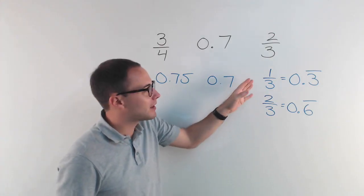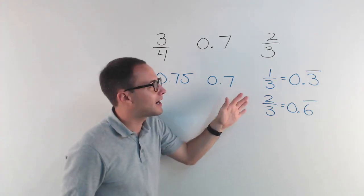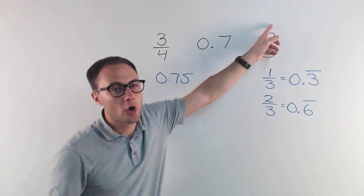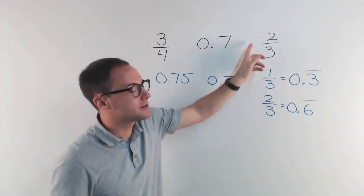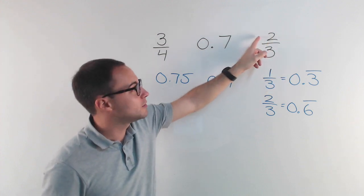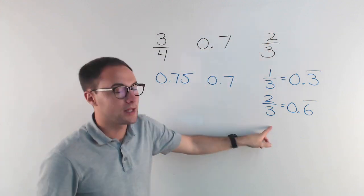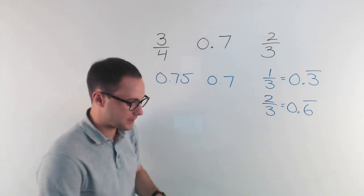If that's one-third, then two-thirds is just 0.6 repeating, so 0.66666. If you don't have those memorized, try to — they're going to help you out a lot. You'll see them all the time. But if not, you can always convert to a decimal by dividing: two divided by three, and you will get the same thing.